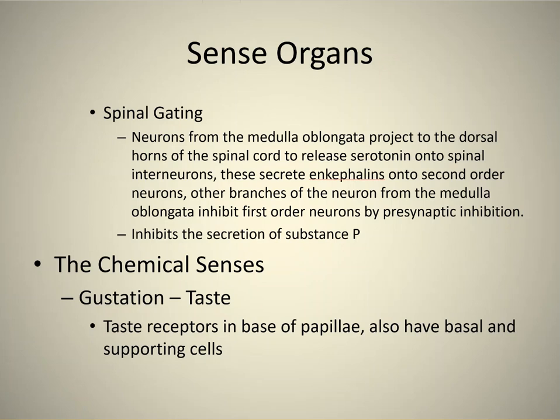So we're jumping from the general senses now to the first of the special senses: gustation, which is another name for taste. This is one of the chemical senses because these receptors detect chemicals — they're chemoreceptors. They are taste receptors at the base of the tongue papillae, the taste buds. We'll talk about taste in a moment, but first I'm going to put up a new slide here, slide 14, that shows the spinal gating pathway.